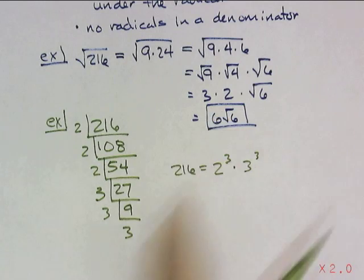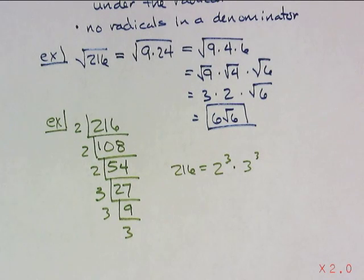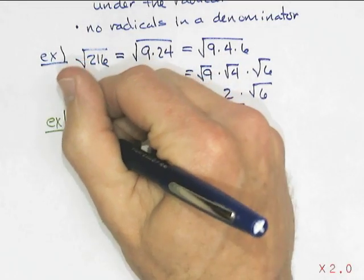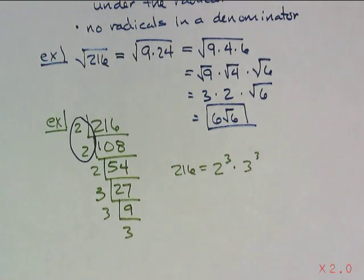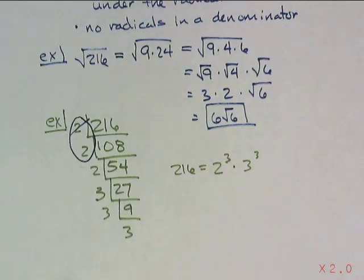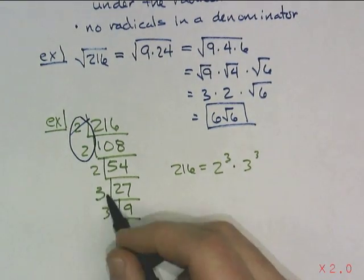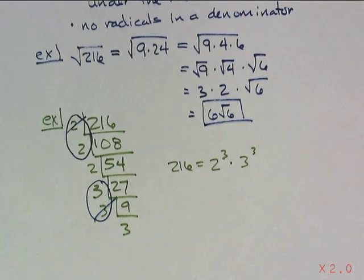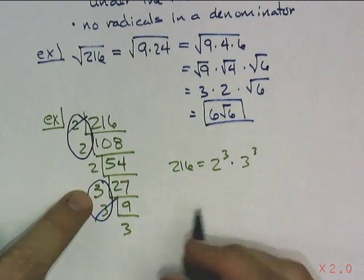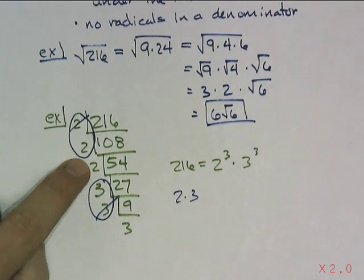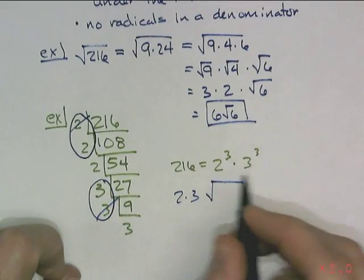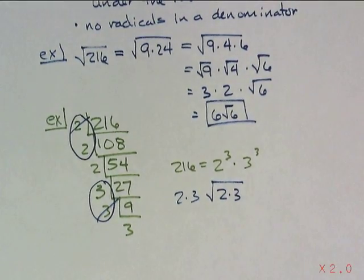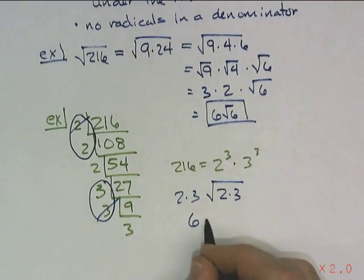How does that help me get 6 root 6? In the jailbreak, it takes two people that look alike for one person to break out of jail in square root numbers. So I have two 2s here that look alike — one dies, one escapes. That extra 2 has no partner. This 3 has a partner — one escapes, one dies. Leaving me with two escapees and two left in jail, giving me 6 root 6.